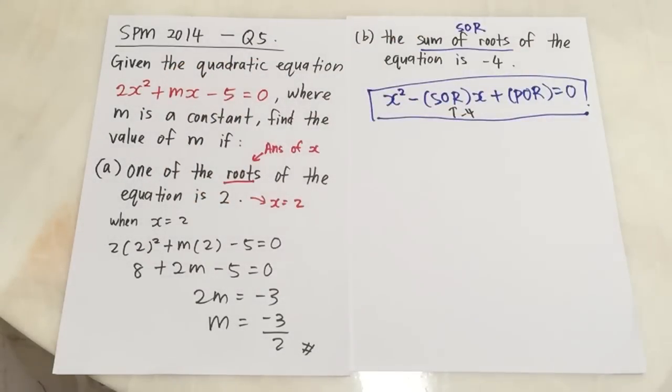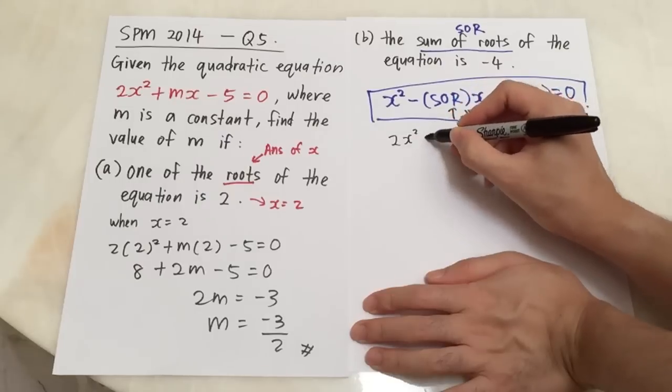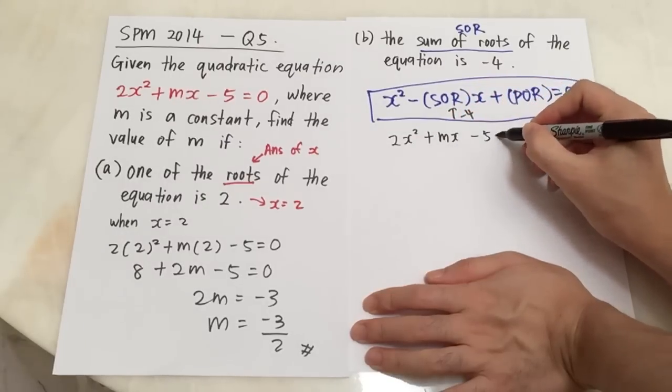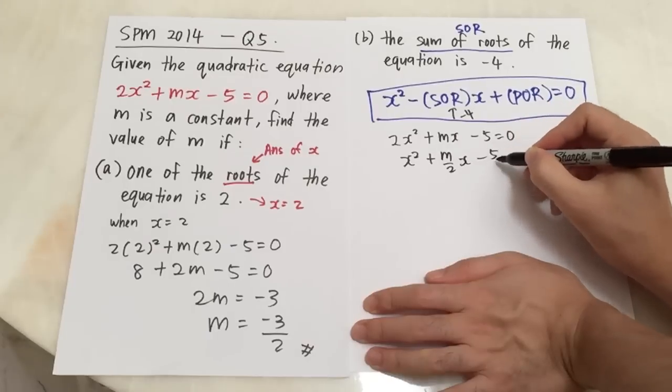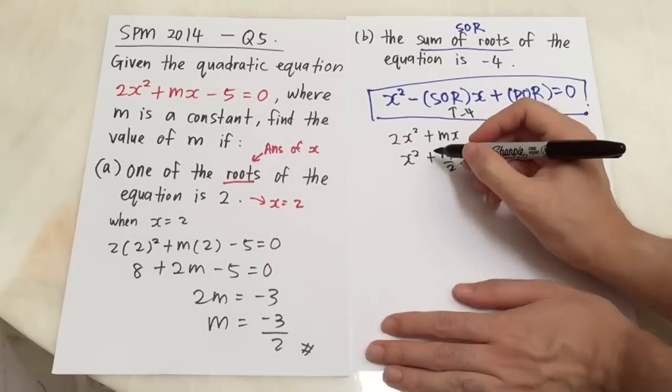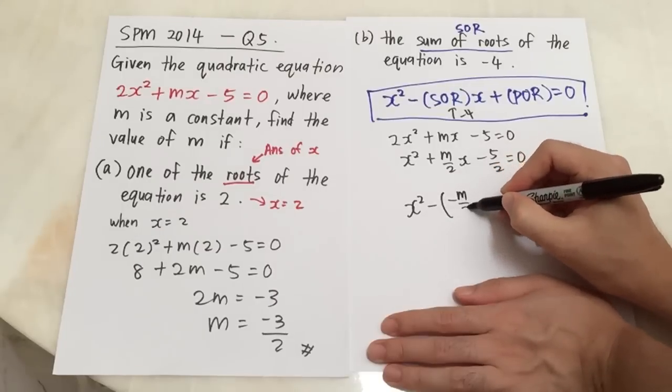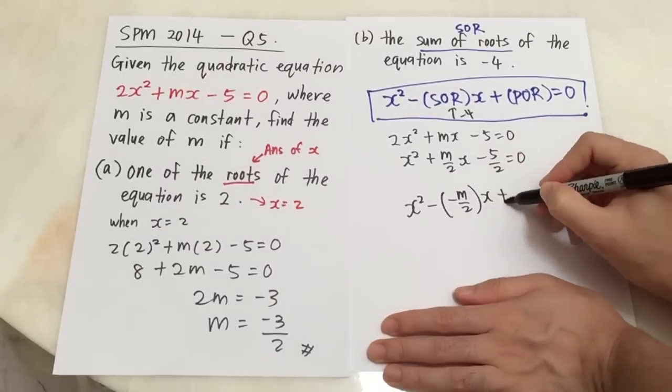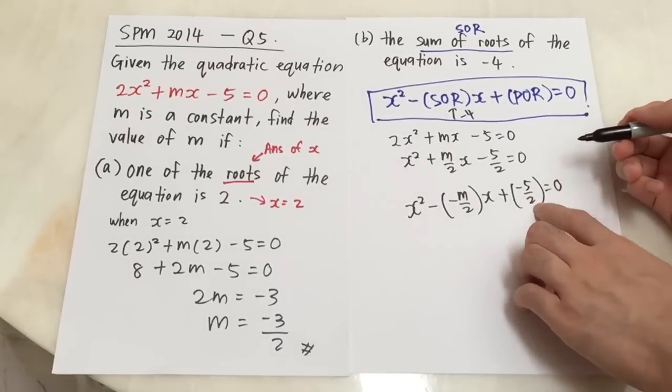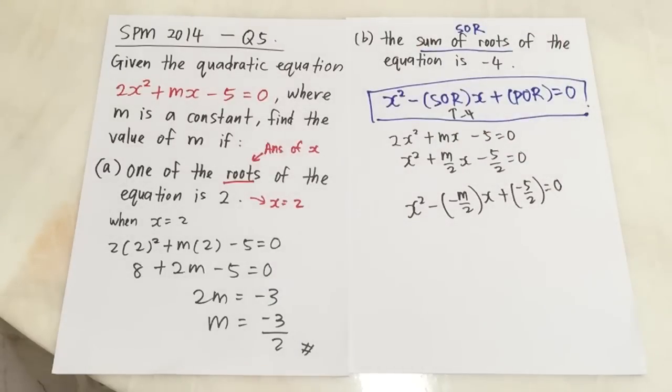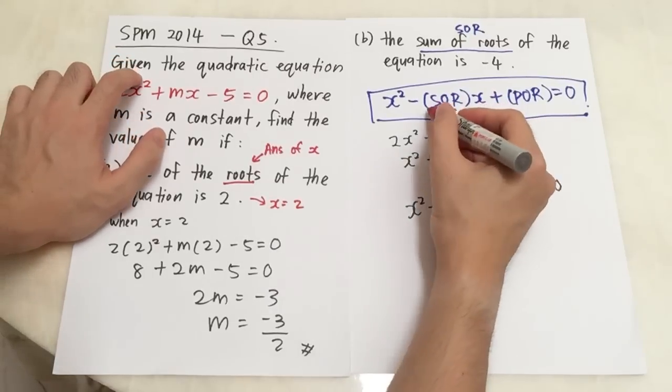So what I will do is I will divide 2 for every single one to make the x squared become 1. And then I will separate the plus become negative multiple negative. Because negative multiple negative, you will get positive. So you see what I do here is 2x squared plus mx minus 5 equals to 0. I divide 2. So x squared plus m over 2x minus 5 over 2 equals to 0.